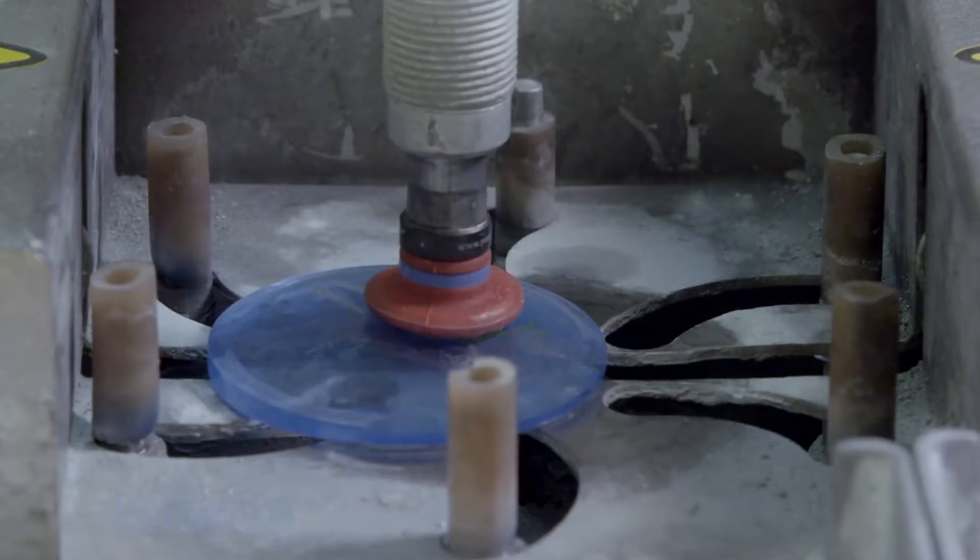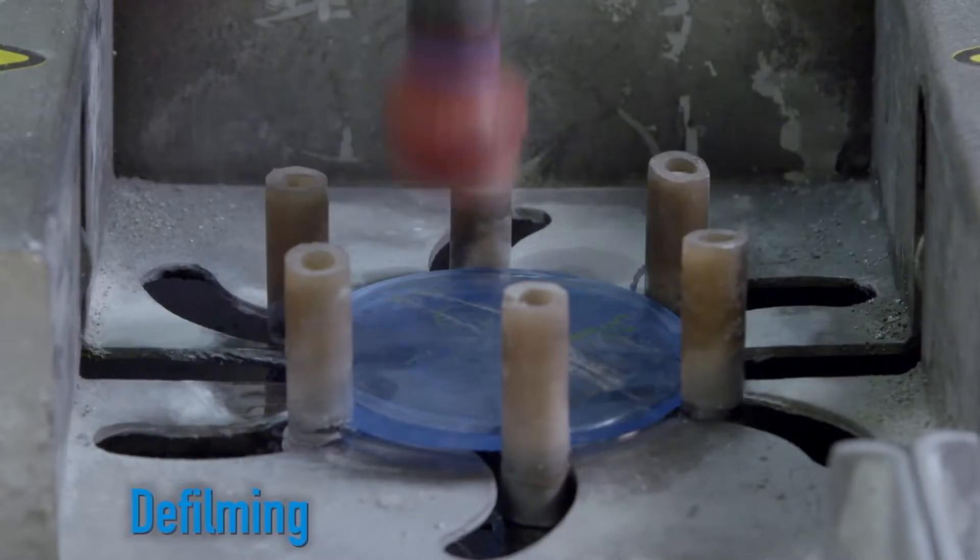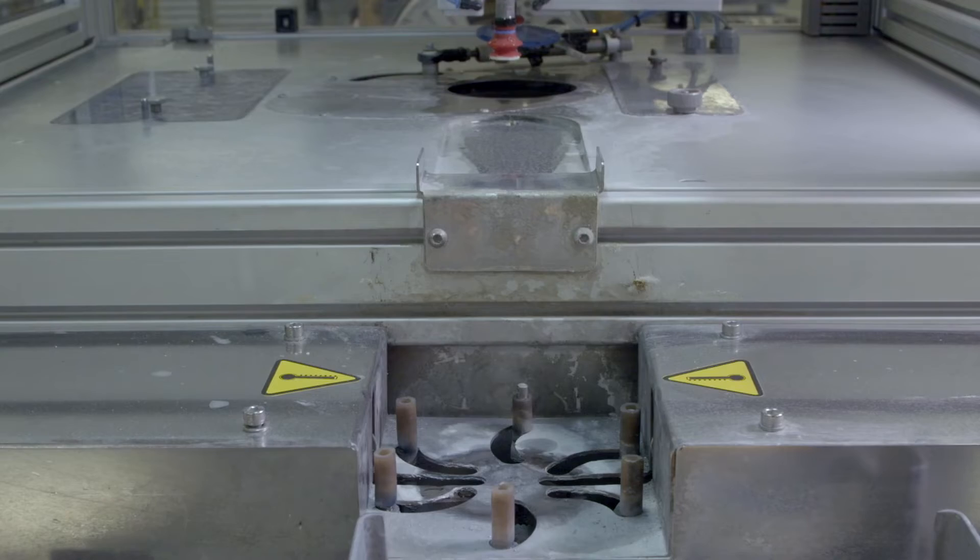Knives make an incision to the protective film while a powerful water jet allows that film to be removed from the lenses.